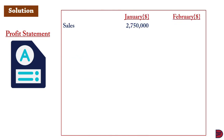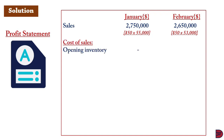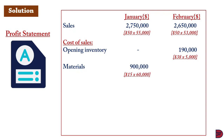For the profit statement, we start with sales: $2,750,000 for January ($50 × 55,000 units) and $2,650,000 for February ($50 × 53,000 units). For cost of sales, there was no opening stock in January. For February, opening stock was $190,000 — that is the marginal cost of $38 multiplied by the 5,000 units left over from January (the difference between January's 60,000 produced and 55,000 sold). Materials for January: 60,000 units × $15 = $900,000.